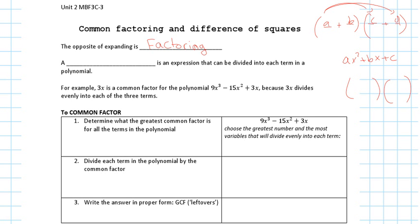There are multiple ways to factor — multiple steps. There are things we have to pick: either this form or this form. Not every kind of factoring works for all kinds of polynomials, so we have to choose which factoring process is the correct one. It's like standing at three different paths and having to pick your way back home — sometimes you have to take two different routes to get there.